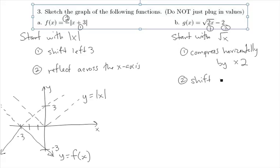So unlike part a, where the number was being added directly to the x, which caused a shift in the x direction, here the number is being added, or in this case subtracted, after we find the square root of 2x. So that's going to cause a shift in the vertical direction, so down 2. So let's see what this looks like.